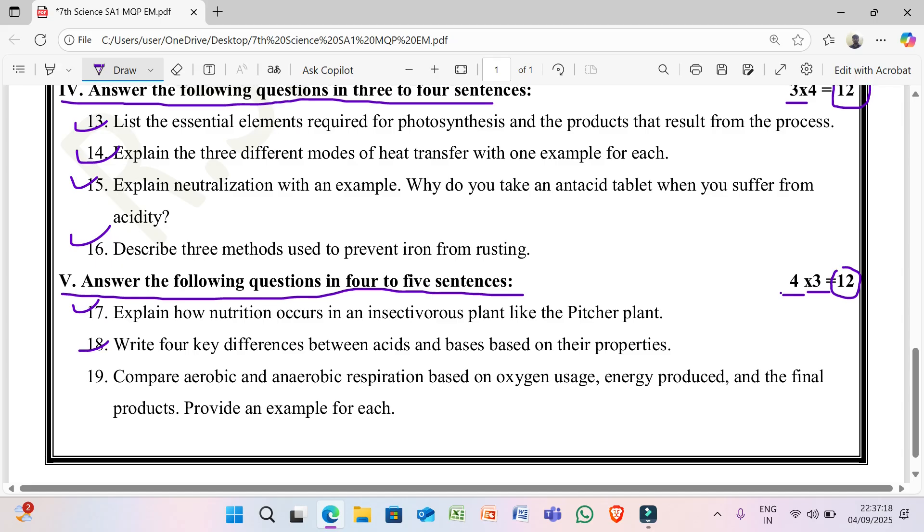18th, write 4 key differences between acids and bases based on their properties. 19th one, compare aerobic and anaerobic respiration based on oxygen usage, energy produced and the final products. Provide an example for each.